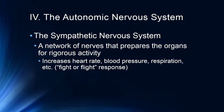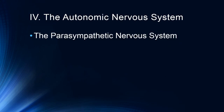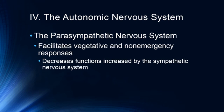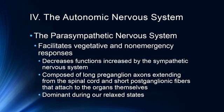The sympathetic nervous system is a network of nerves that prepares the organs for rigorous activity by increasing heart rate, blood pressure, and respiration. It is composed of ganglia on the left and right of the spinal cord. The parasympathetic nervous system facilitates vegetative and non-emergency responses — it is the calmer, more relaxed counterpart. It decreases functions that are increased by the sympathetic nervous system and is composed of long preganglionic axons extending from the spinal cord with short postganglionic fibers attached to the organs. The parasympathetic system is dominant during relaxed states, while the sympathetic system activates during high-stress or life-threatening situations.